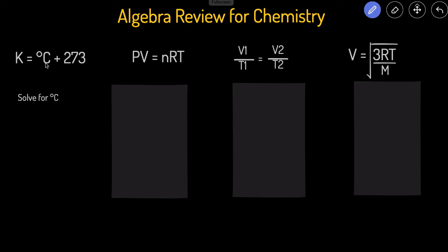This first equation is K equals degrees Celsius plus 273, and we're solving for degrees Celsius. To isolate this variable, we have to get rid of its neighbors — specifically the 273. To get rid of something in algebra, you do the opposite of the operation. Since degrees Celsius is being added to 273, we subtract 273 from both sides. That cancels it out, leaving us with degrees Celsius equals Kelvin minus 273.